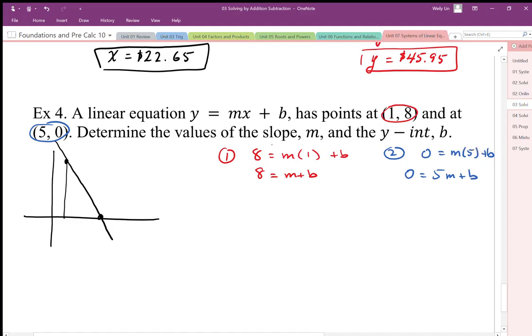The relationship is not with x and y, but the relationship is between m and b. And this is how m and b are related: m plus b equals 8, 5m plus b equals 0.